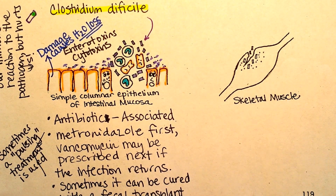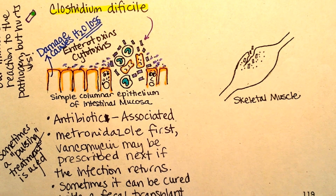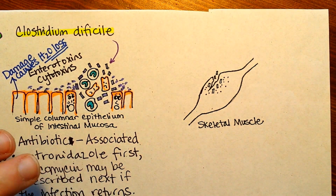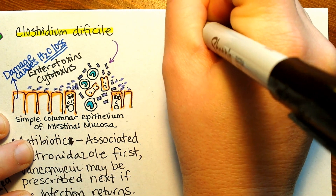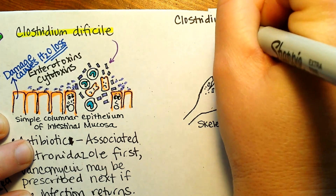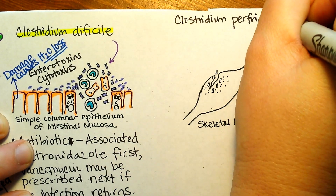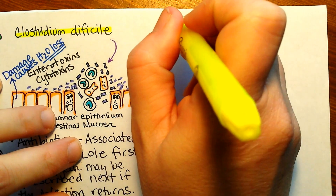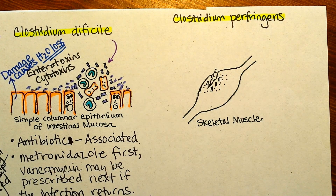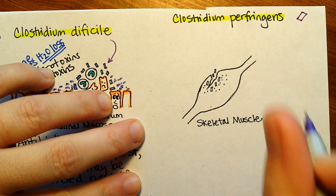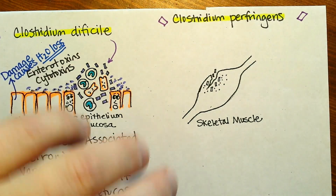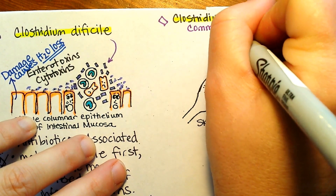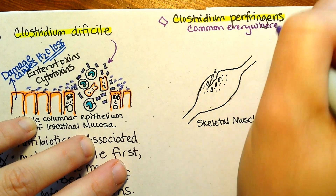This page of your notes is about Clostridium perfringens. Clostridium perfringens, like the other Clostridium we've been talking about, is of course Gram-positive rods. These Gram-positive rods can basically be found everywhere, so this bacteria is common everywhere. What that means is most of the time it's not making us sick.